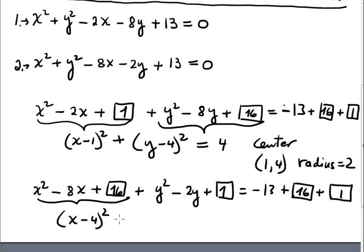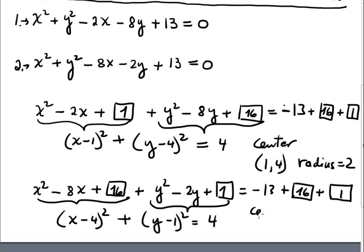The factorization of the second circle gives y minus 1, and on the right hand side we have 4. The conclusion: center is (4, 1) and the radius is 2 again.